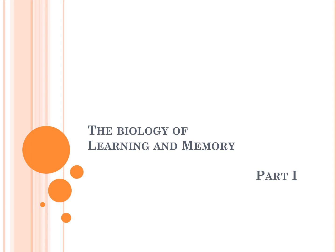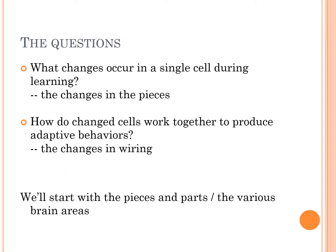I have left myself at most 24 minutes to get started on learning and memory, or the biology of learning and memory. When talking about how the brain learns, we have two main questions: one is what changes are occurring in a single cell during learning — the changes in the pieces and parts — and second, how do changed cells work together to produce adaptive behaviors, which is really a question about the wiring and connections between cells. We're going to start with the pieces and parts.